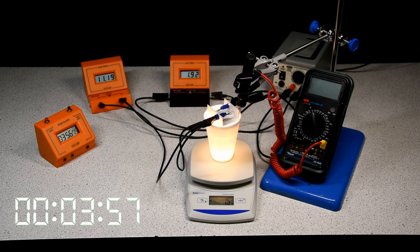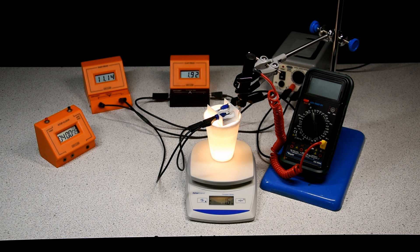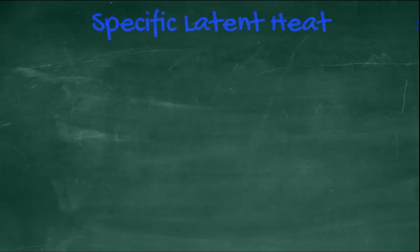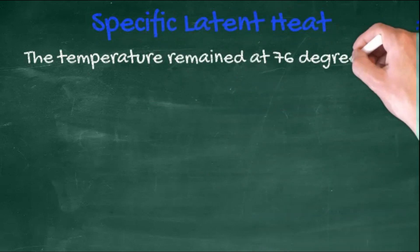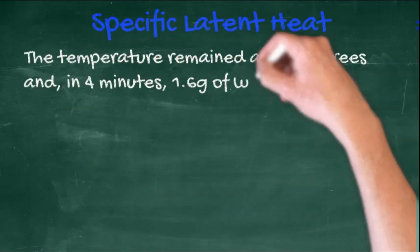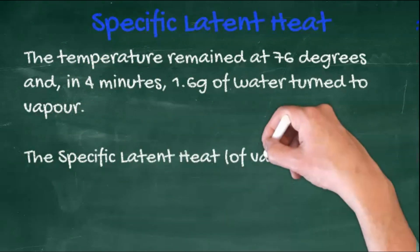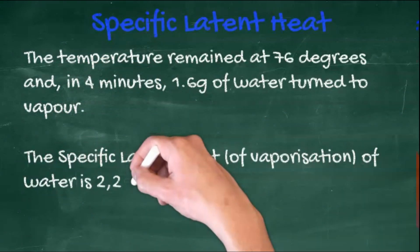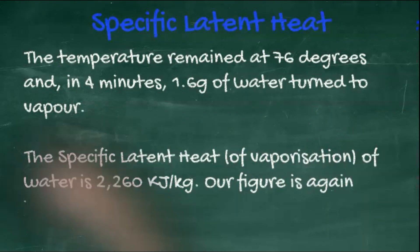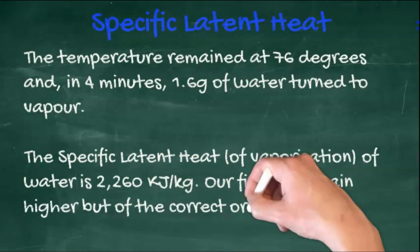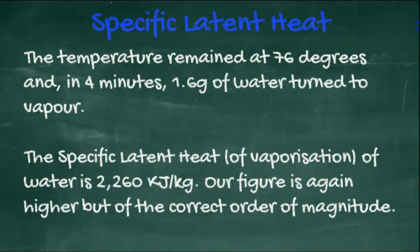The temperature remained at 76 degrees throughout, and in four minutes, 1.6 grams of water turned into vapor. The specific latent heat of vaporization of water is 2260 kilojoules per kilogram. Our figure again is higher but of the same order of magnitude.